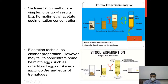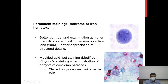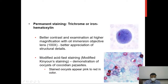Permanent staining is the recommended method when looking for details inside cystic structures. Trichrome or iron haematoxylin staining methods are the two common methods used. These give better contrast and specimens are examined under oil immersion (100x objective), giving the advantage of higher magnification to look for details inside nuclei and other internal structures, which helps differentiate closely resembling cysts that are hard to distinguish in simple saline and iodine mounts.